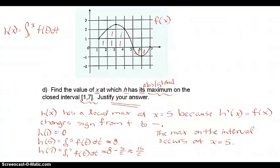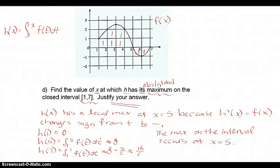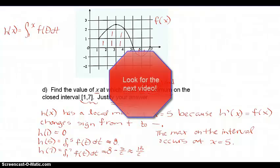You could also do this verbally — explaining that from part a h of 1 is 0, positive area accumulates up to x equal 5, then negative area follows, so h of 5 must be greater than h of 7. Just make sure you clearly communicate why the max happens at x equal 5. We'll stop here and pick up in the next video with more examples of functions defined by integrals.